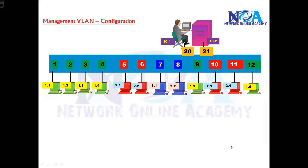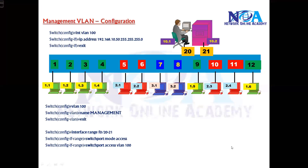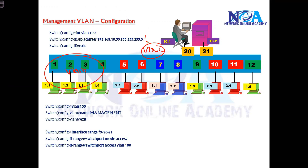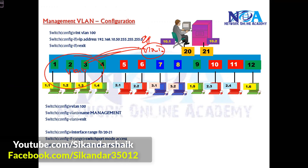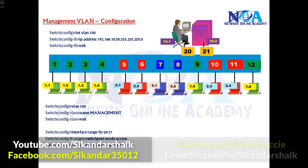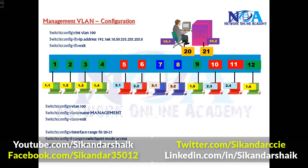I can now verify that I can manage the switch remotely from the management VLAN. This is best practice — having a separate VLAN for management. Even though you can assign an IP to VLAN 10 and still manage from there, that is not a recommended practice. It is recommended to use a separate VLAN dedicated only for management traffic.